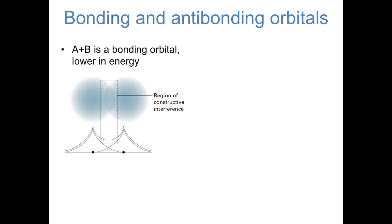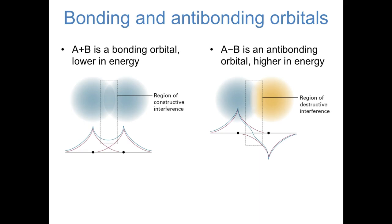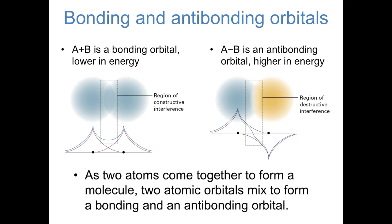Finally, to summarize the key takeaway from this video: as we brought two atomic orbitals together, we ended up with one orbital that resembled A plus B, the sum of the two atomic orbitals, that was lower in energy than the atomic orbitals. This is a bonding orbital, where the electron density accumulates between the two atoms. We also saw a molecular orbital that resembled the difference between the two atomic orbitals, A minus B, that was higher in energy. This is an antibonding orbital, where there's actually a node between the two atoms, a change in sign of the wave function. This sort of mixing of two atomic orbitals is general: as two atomic orbitals come together, they tend to mix to form a bonding orbital that's lower in energy and an antibonding orbital that's higher in energy. We'll see how this sort of mixing plays out for more complicated diatomic molecules in the next video.